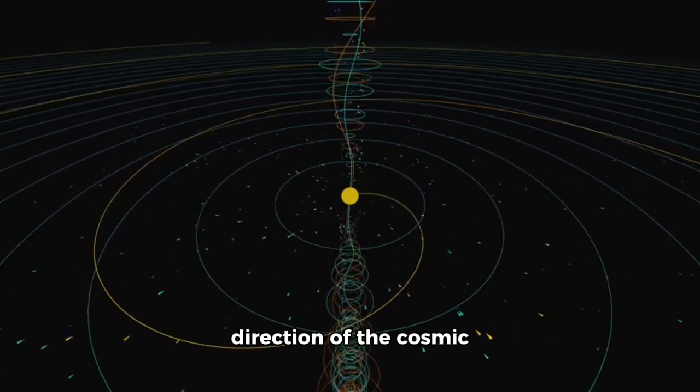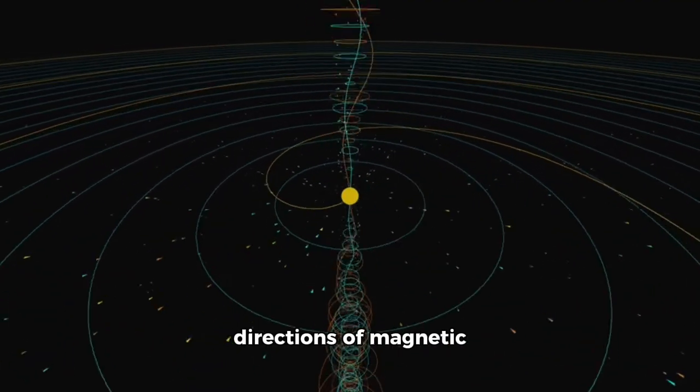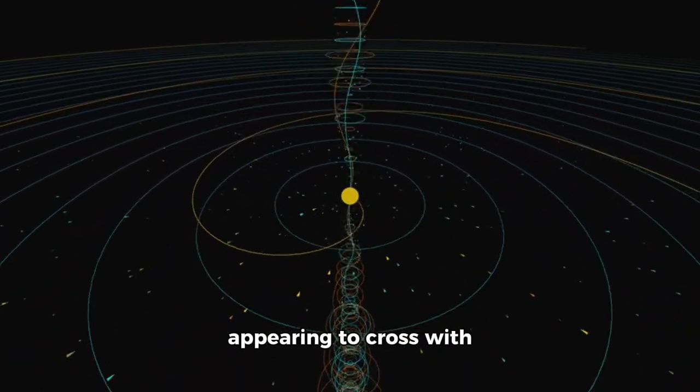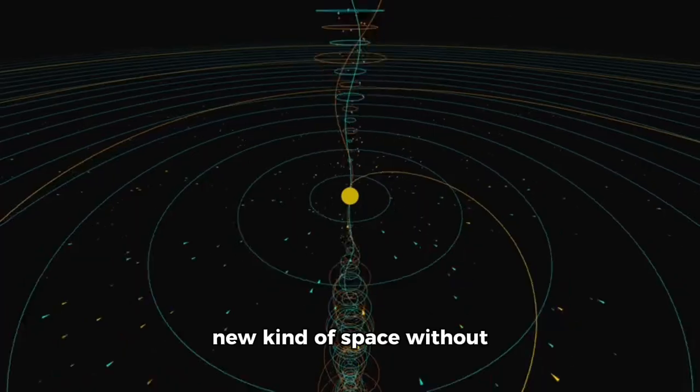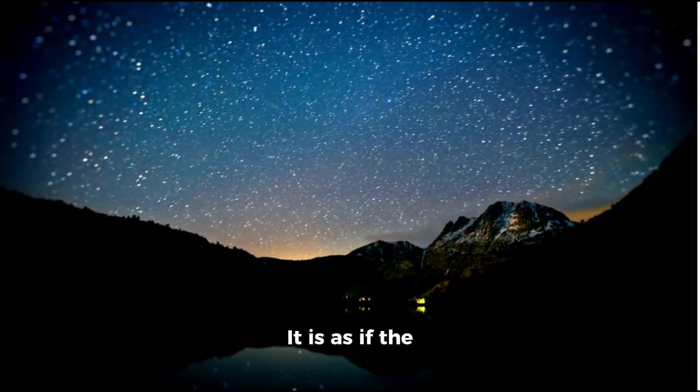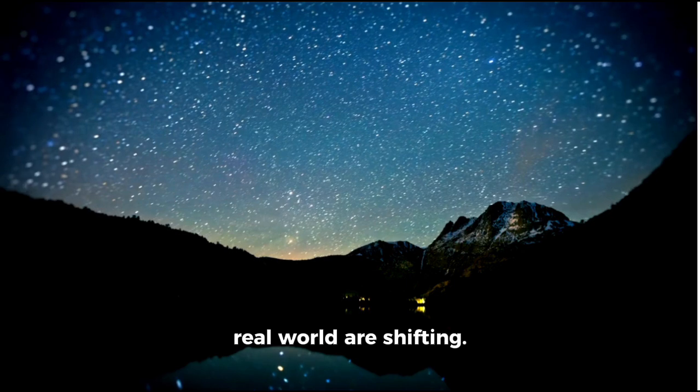What's more, the direction of the cosmic rays and all the directions of magnetic lines are misaligned, appearing to cross with Voyager 1 into a brand new kind of space without a model yet to be explained by interstellar physics. It is as if the regulations of the real world are shifting.